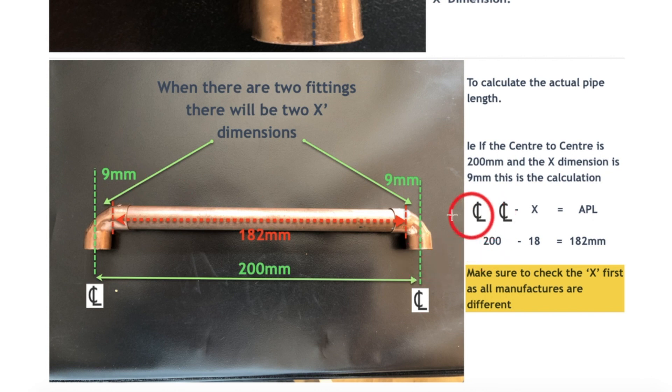The mathematics to get the actual pipe length cut correctly: you need to know the X factor of each end. The center line to center line is 200mm minus 18, and the 18 is 9 plus 9. One deducted from the other gives us 182 millimeters, and therefore you would cut that piece of pipe at that distance.